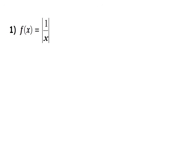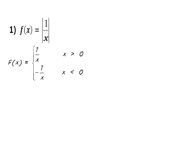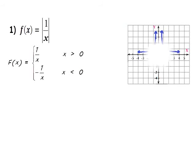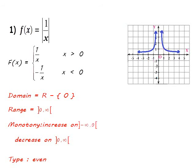For f(x) = |1/x|, expanding the absolute value gives 1/x when x > 0, and -1/x when x < 0. When x > 0 the curve is in the first quadrant, and when x < 0 with the negative it is drawn in the second quadrant. The domain is ℝ except 0, and the range is (0, ∞). The function increases from negative infinity to 0, then decreases from 0 to infinity. It is an even function because it is symmetrical about the y-axis.